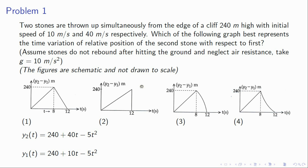You should also check at 8 seconds — y1 of 8 is 0. That means at 8 seconds the first stone hits the ground and stops there. So after 8 seconds if you calculate y2 minus y1 it will just be y2 because y1 is 0. The shape after 8 seconds is a parabola — an inverted parabola because it's minus 5t squared. So if you look at the options, it goes to a straight line and then it's an inverted parabola. So option 3 is right.